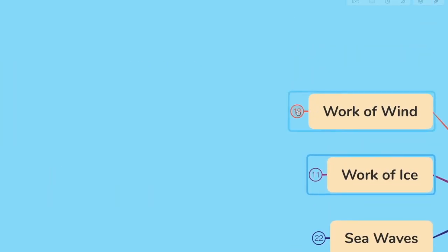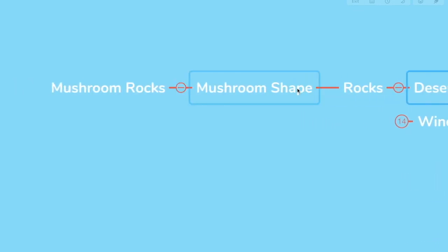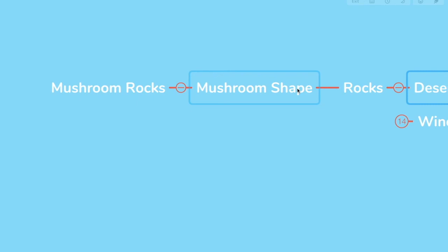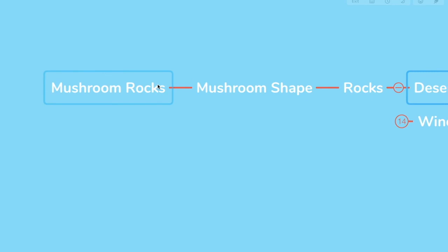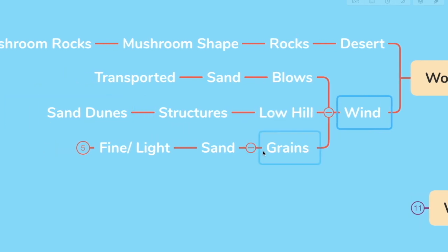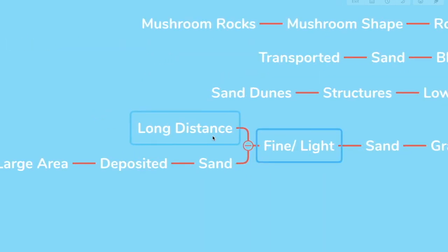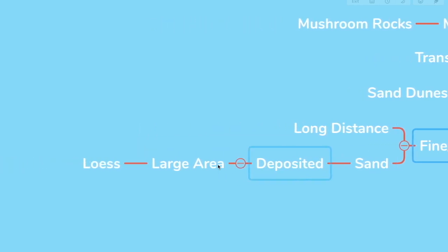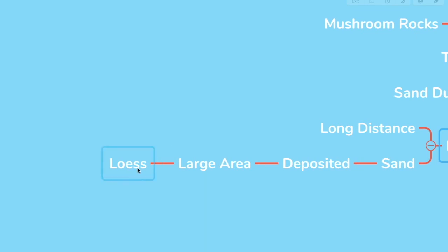Finally, let's look at work of wind. In the desert, you get rocks in the form of mushroom shape. Why? Because the lower portion is eroded because of the heavy wind and only the upper portion remains, forming a shape of a mushroom. Hence, they are called mushroom rocks. Now, the wind blows and sand is transported and the low hill structures are called sand dunes. When the grains of sand are very fine and light, the wind carries it over a very long distance. When such sand is deposited in large areas, it is called loess.